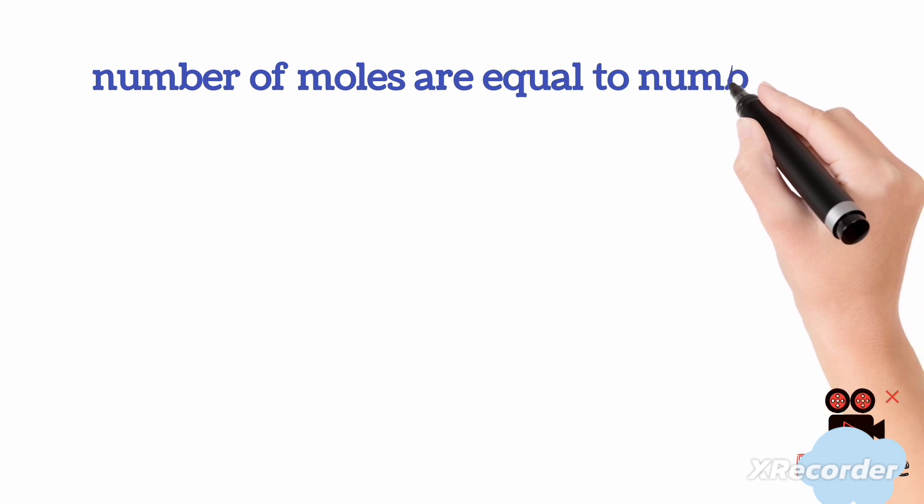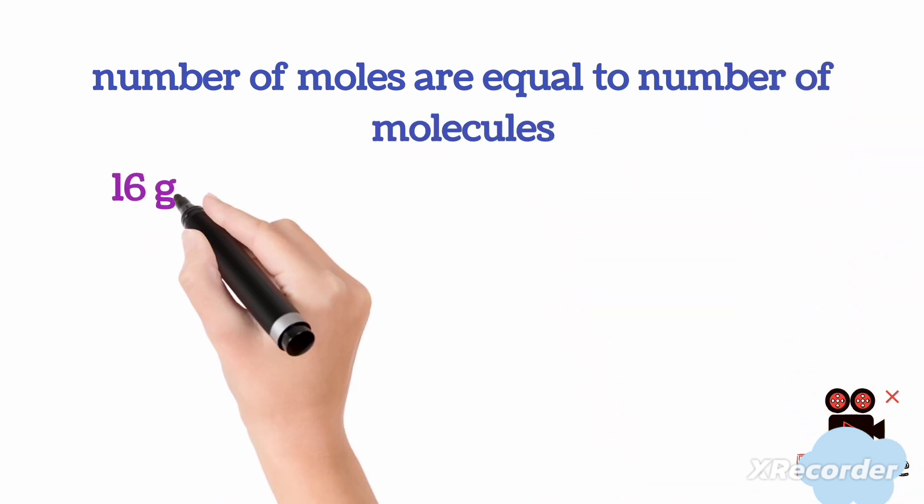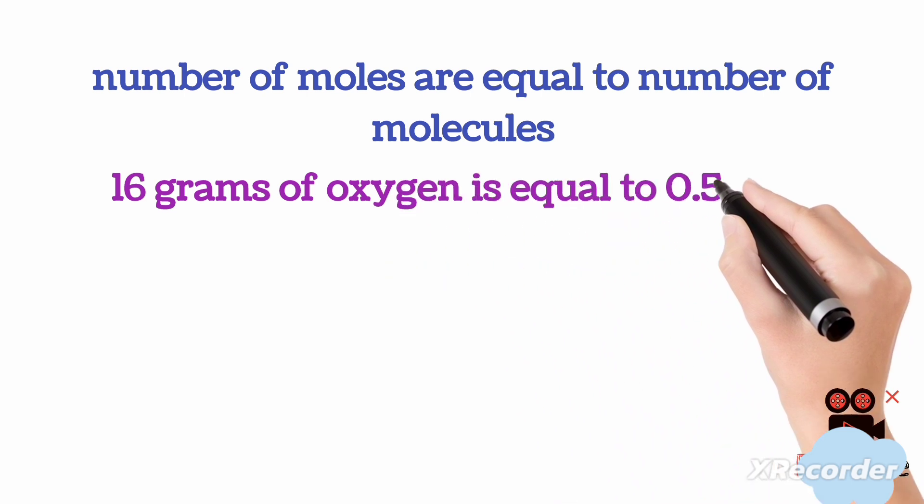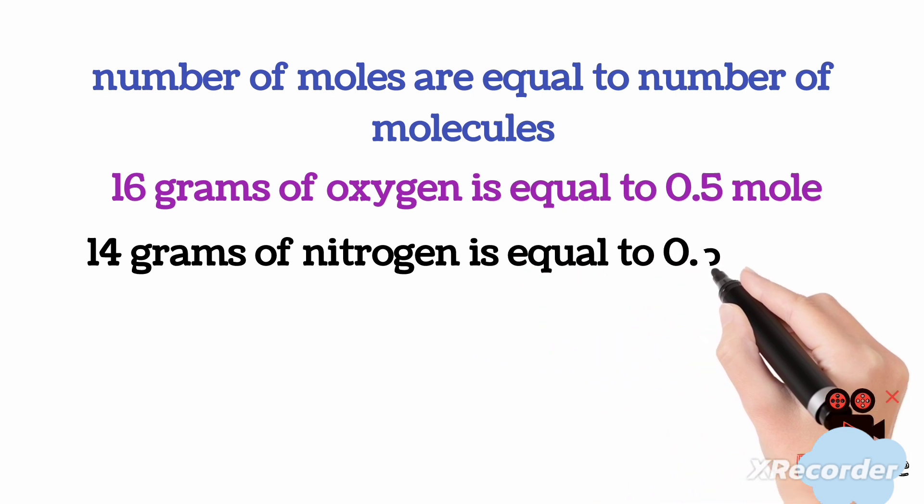One mole of any gas, which is equal to its molar mass, contains 6 into 10 to the power of 23 molecules. Among the given options, option A, 16 grams of oxygen and 14 grams of nitrogen, are exactly equal to 0.5 moles.